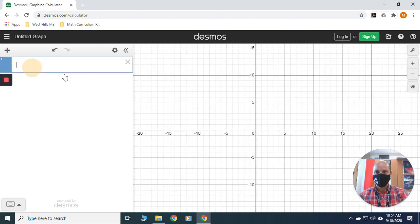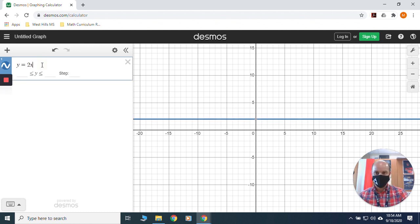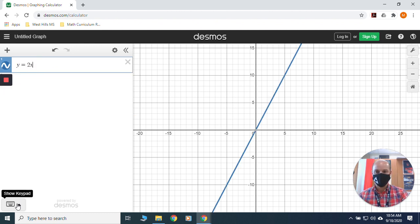In this top left section, enter in our equation. I'm going to start with the equation of y equals 2x squared. I need to get squared.